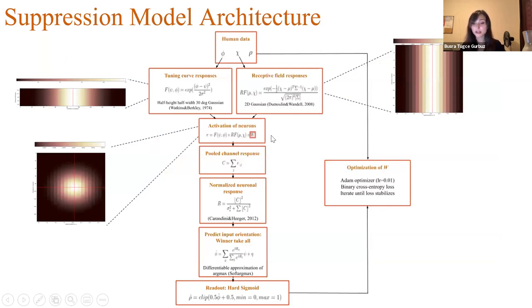Then, by using this activation, we created the pooled orientation channel response by just summing the response of neurons at all spatial locations. And then we normalize this neuronal response so that we will find activation with respect to the activation of other neurons. And then we predicted the input orientation by using winner-take-all methods. And to make it differentiable because of optimization, we used an approximation of argmax, which is called soft argmax. And to create a readout of this predicted orientation as a response, we activate this predicted orientation with hard sigmoid. And then we take predicted perceived tilt and human perceived tilt. And by using these values, we optimize the W to minimize the loss between these two values.